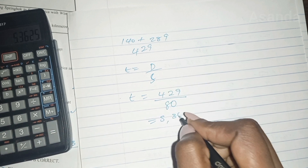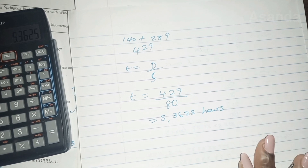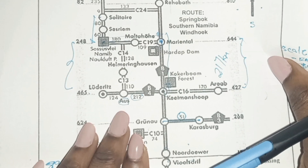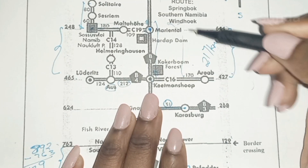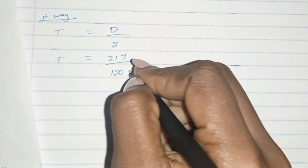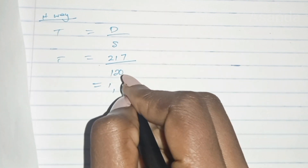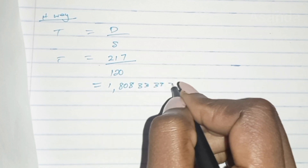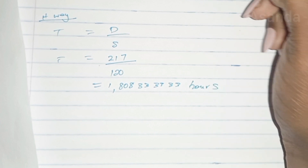That gives us 5.3625 hours for the gravel road. Now let's find the highway distance — we calculated that for the first question and it's 217 kilometers. Time equals distance over speed, so that is 217 divided by 120 kilometers per hour, which gives us 1.80833 hours for the highway road.